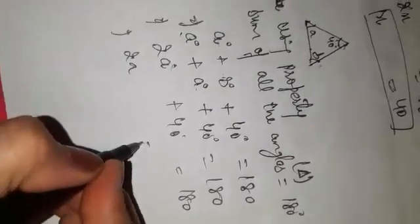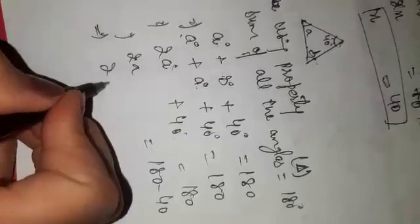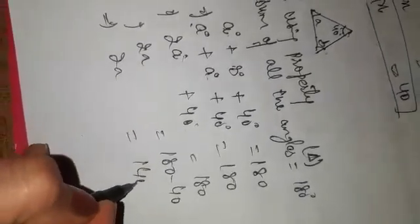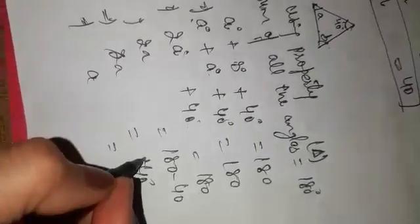2A equals 180 minus 40, which is 140. A equals 140 divided by 2, which equals 70 degrees.